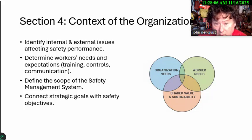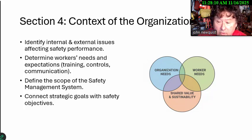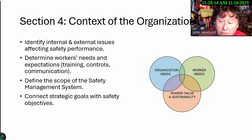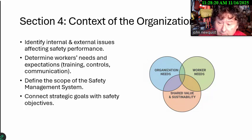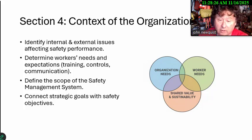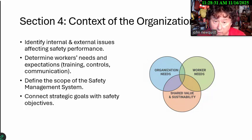It requires you to determine worker needs and expectations — whether that's training, controls, or communication — and define the scope of the system: does it cover all workers, or just those in the facility? Then connect the strategic goals of the company with safety objectives. The needs of the organization have to be balanced with the needs of the worker as a shared value.